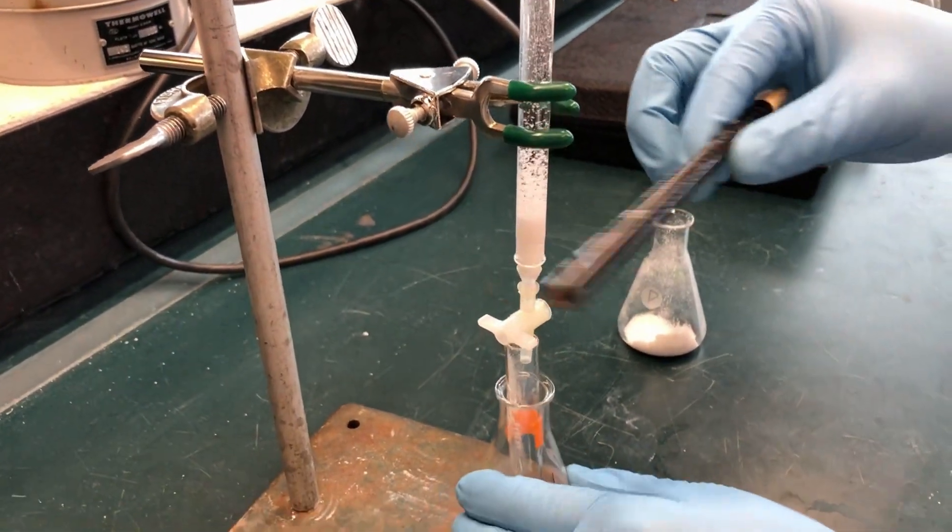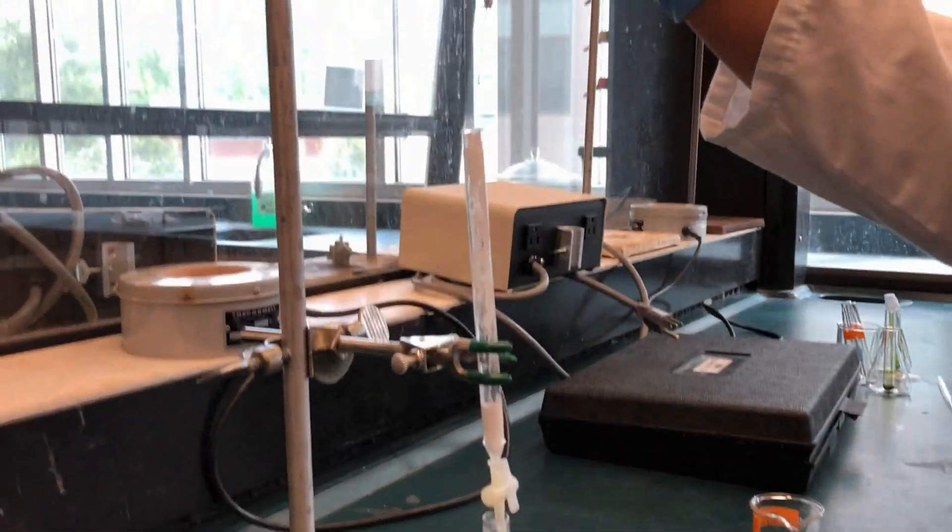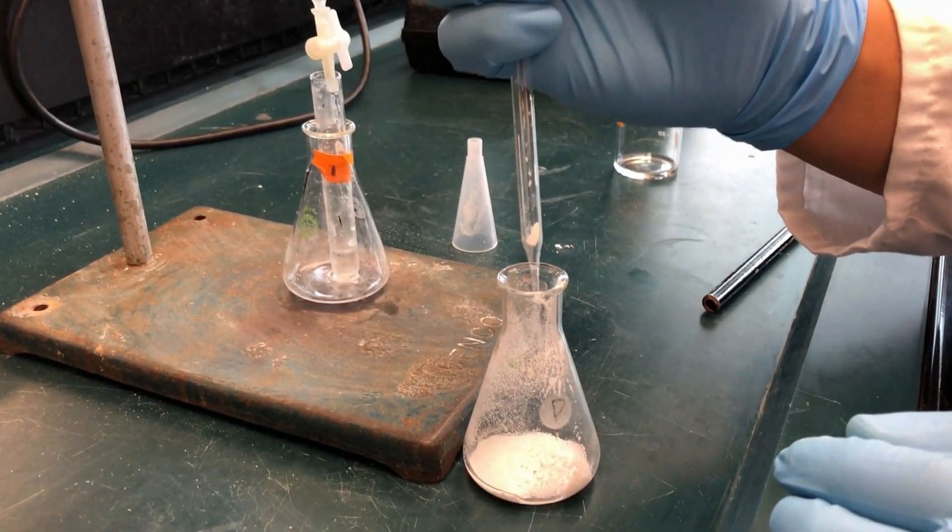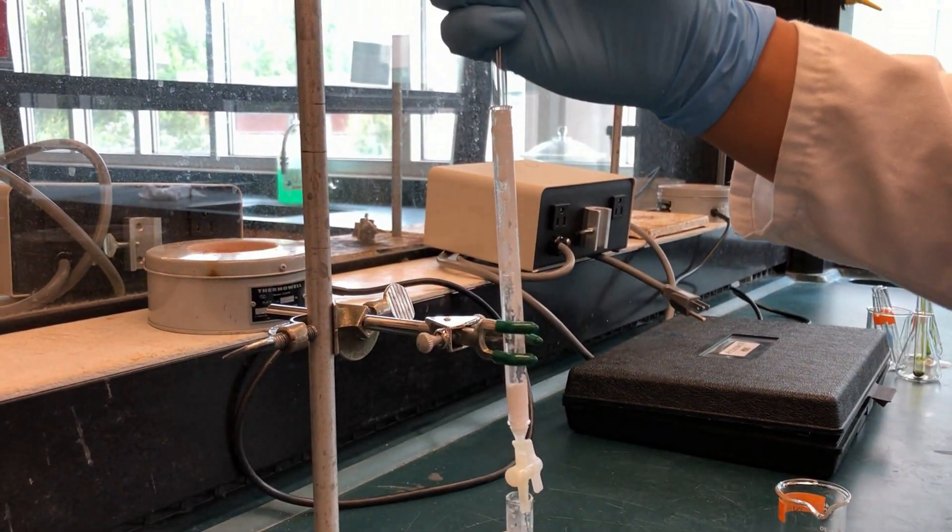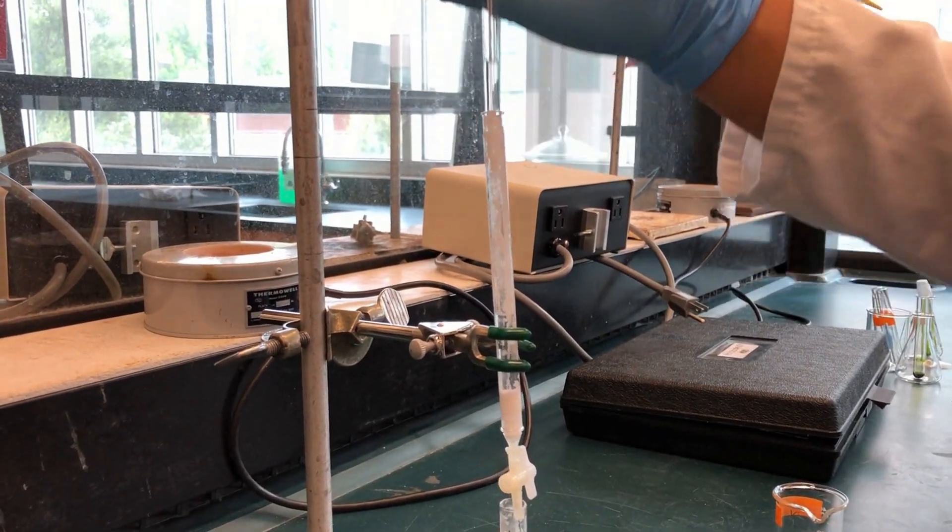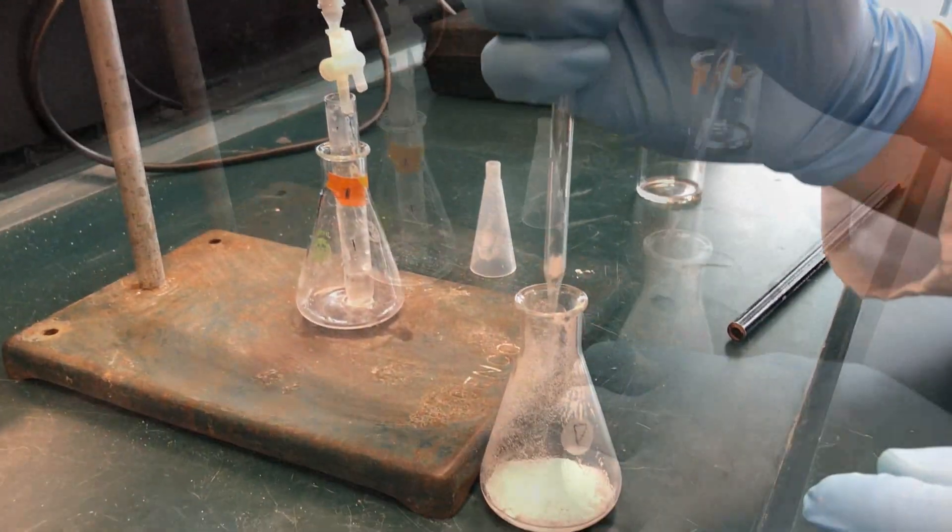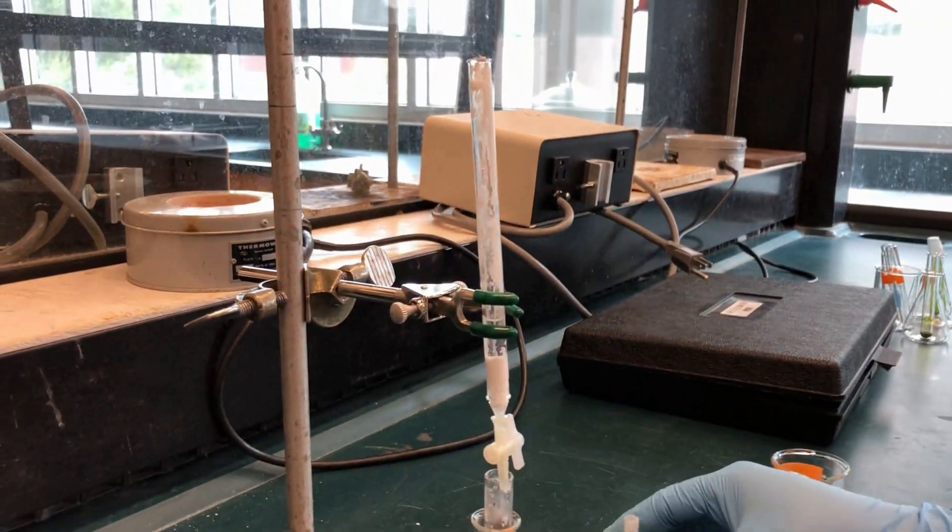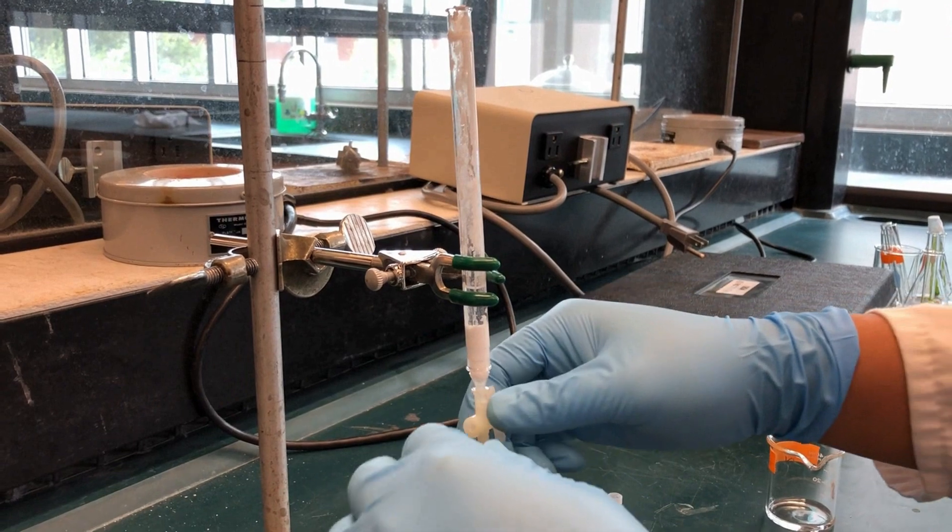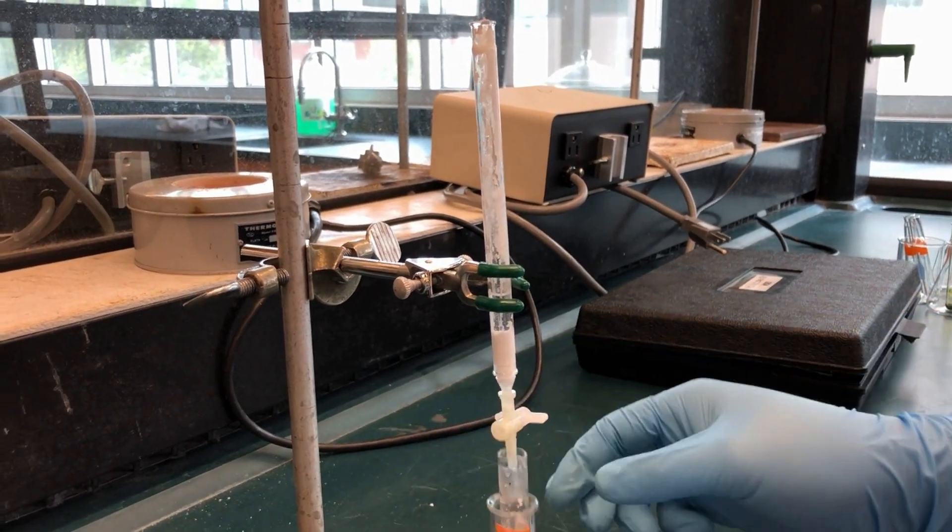Lightly tap the column with a pencil to help the alumina settle and avoid cracking. If the collection is slow, you can pipette the excess petroleum ether from the column to be reused to mix the alumina in the flask. Be careful not to pipette the settled alumina. Repeat this process until there is about 1 inch of alumina.